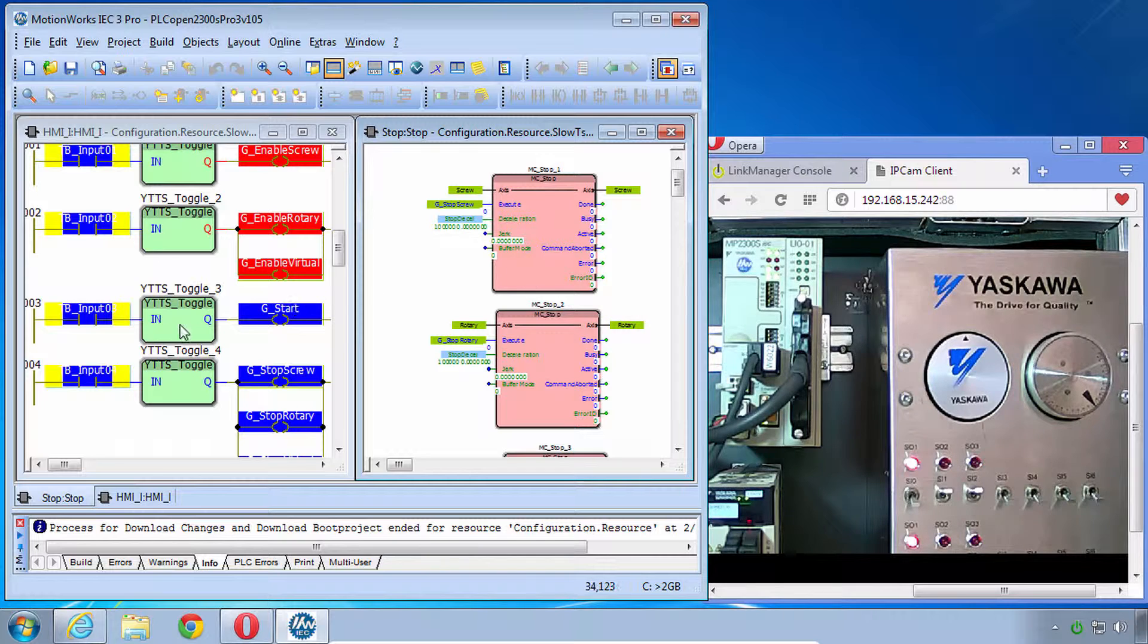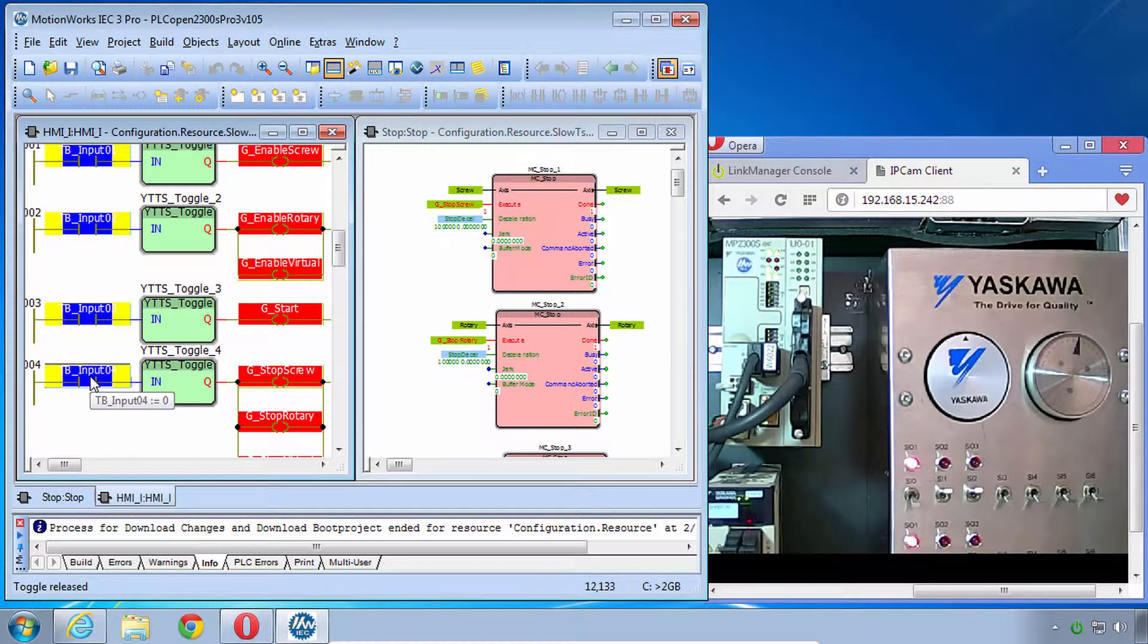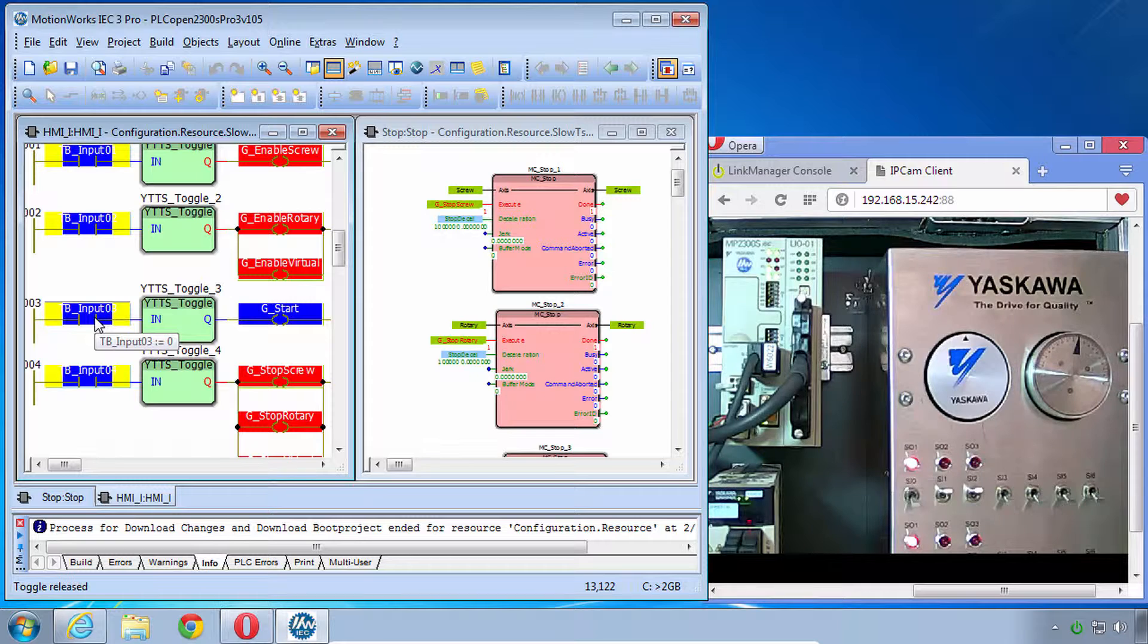Now if we want to have something to stop, we need to start it first. So I'll start the motion that we had before. And now let's see if we can cancel it during one of the moves. So there I stopped right during the move. And you notice that it didn't finish the move like it did before when we just turned off the start input. Start off, start on.